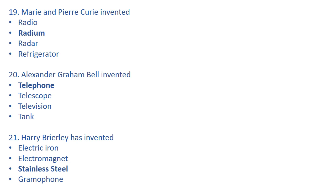Harry Brearley invented stainless steel, which is popular in construction and various other fields. Stainless steel was invented in 1913 and he belongs from England. Electric iron was invented by H.W. Seeley of USA in 1882. Electromagnet was invented by W. Sturgeon of England in 1824. Gramophone was invented by T.A. Edison of USA in 1878.